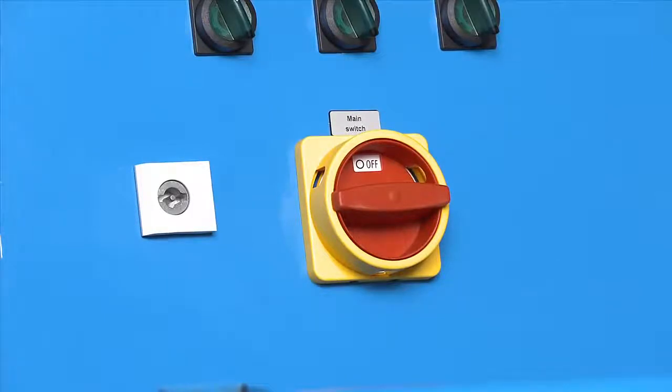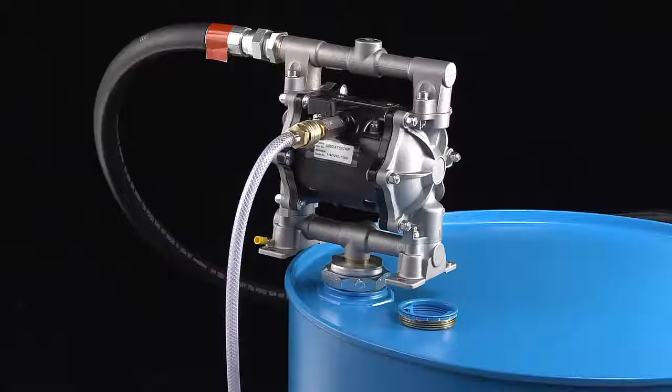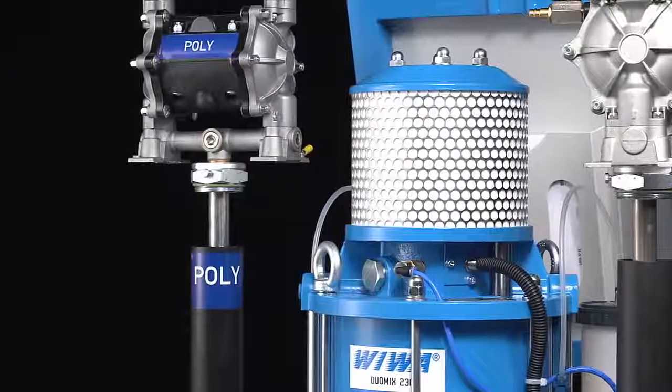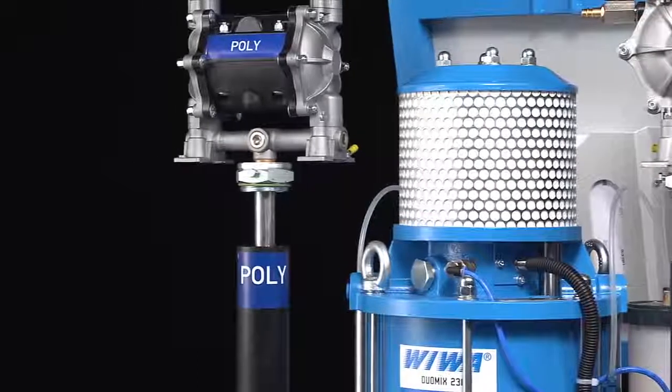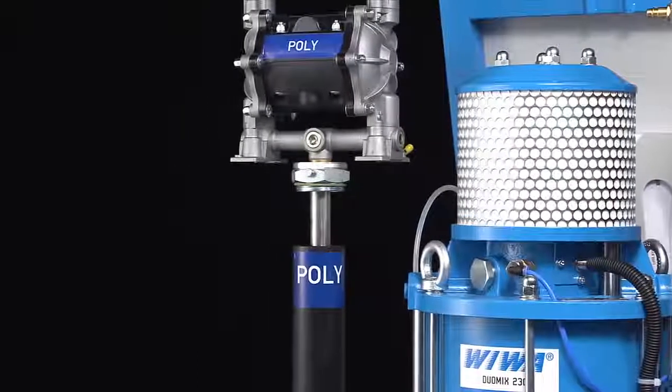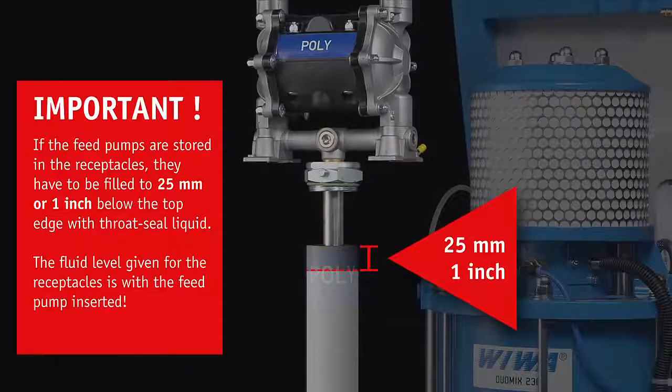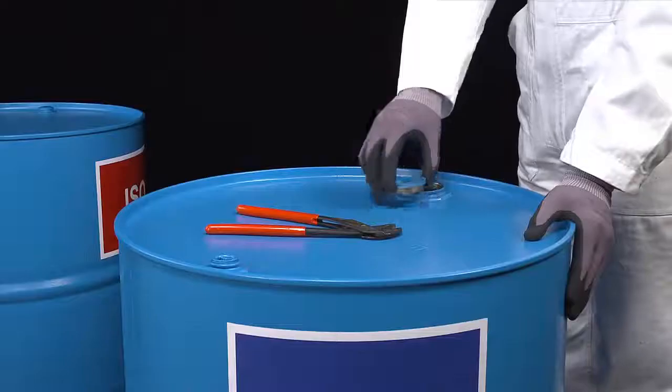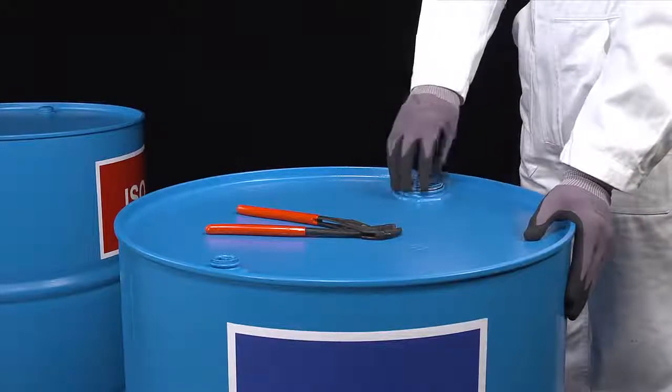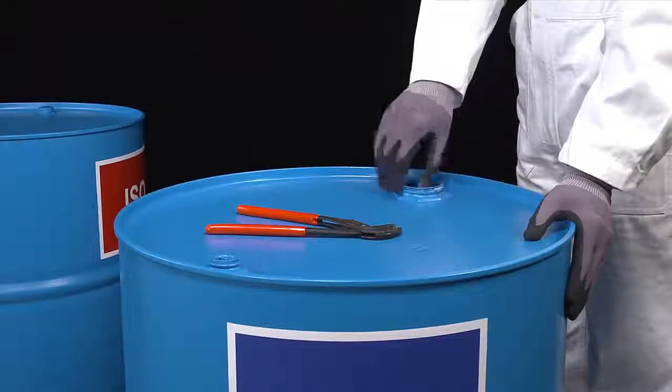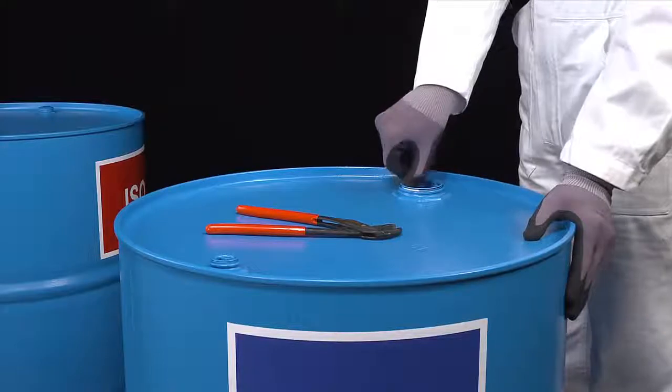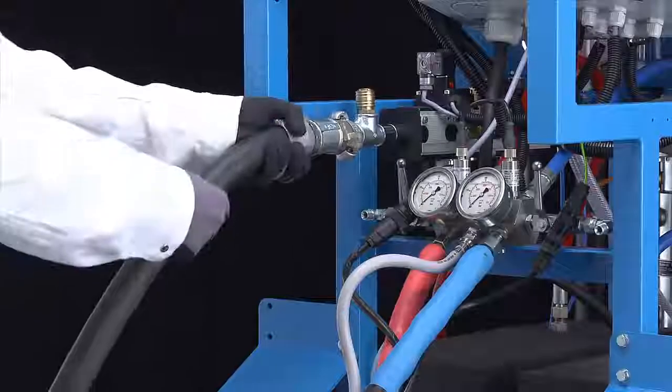The system remains pressurized to avoid crystallization of material in the material hoses. The feed pumps remain in the drums or are stored for transportation in the receptacles filled with throat seal liquid. Ensure that the receptacles for the feed pumps are always filled to 25 millimeters or one inch below the top edge with throat seal liquid. If the feed pumps or suction hoses are removed from the drums, you must close the bung holes and the air inlet on the lids. Then disconnect the inbound air supply.